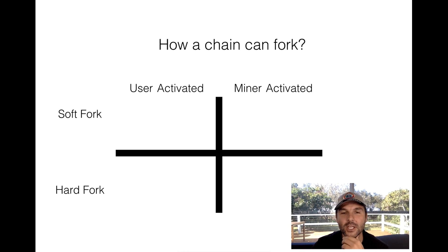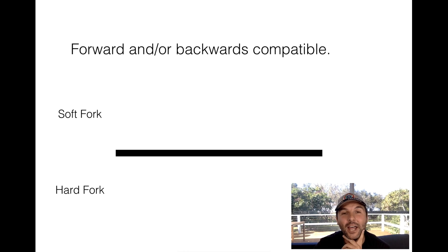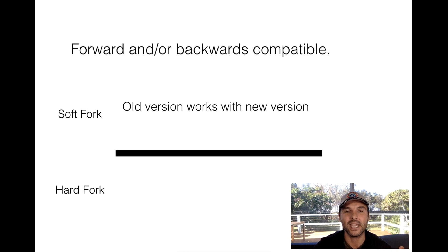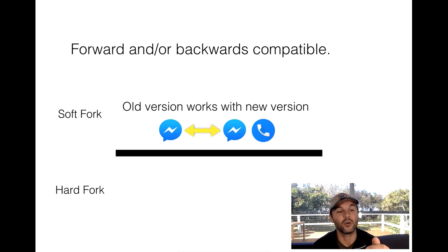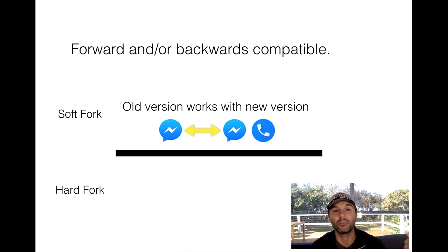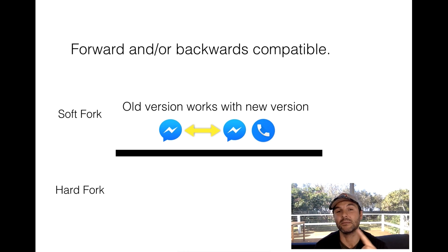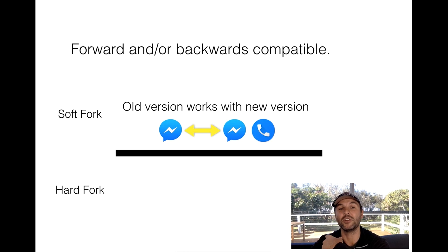Let's look at soft and hard forks, and basically what that has to do with is whether it's forward and/or backwards compatible. A soft fork means that the old version still works with the new version, but you might be able to do some extra things with it. A good example is Facebook a couple of years ago — when you had Messenger, all of a sudden you had an icon where you could actually make calls. It added a feature. It doesn't mean that you couldn't message people previously, and people who didn't upgrade couldn't call you, but they could always still message you. So nothing was lost in the messaging service — it was just a little thing added on. Basically, a soft fork means the older version works with the new version, and the new version can do some other things.